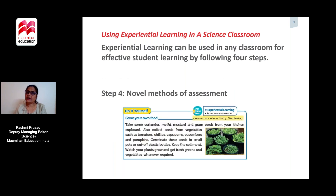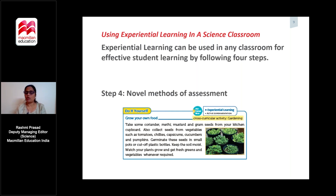The fourth step is the assessment based on the learning. This assessment can be in the form of paper and pen, or there can be novel methods such as project work where students grow seeds commonly found in the kitchen. Now that they know the conditions required for germination, they will provide those conditions and see the seeds grow into healthy seedlings.